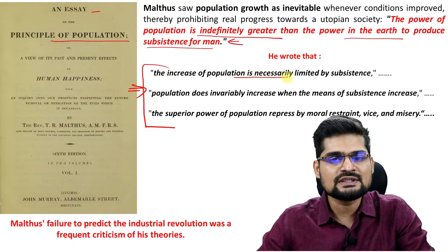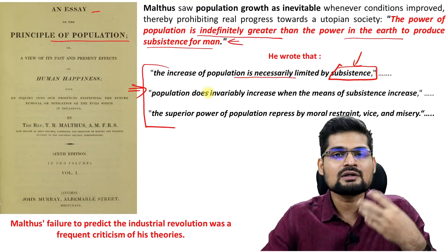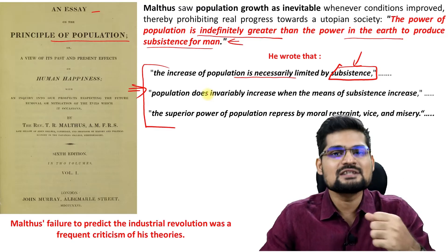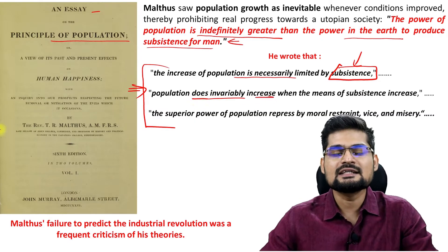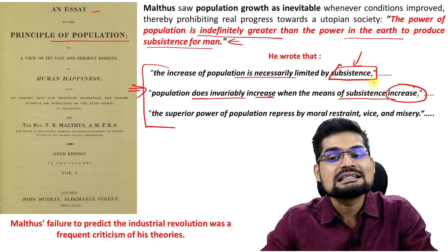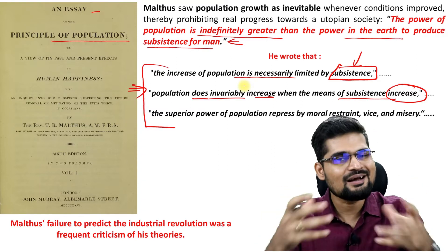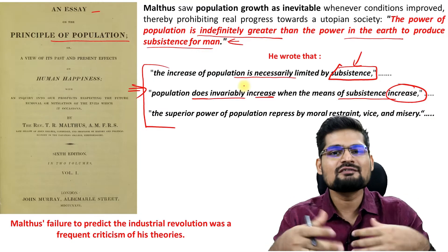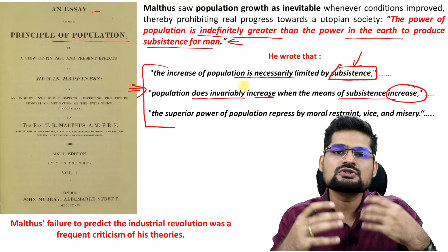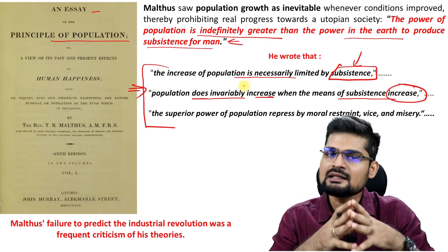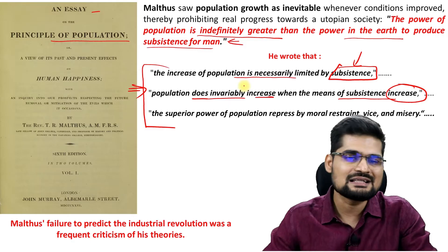Population does invariably increase when the means of subsistence is increasing. Means of subsistence is the basic idea of food, clothing, and shelter — the basic facilities. If you have those basic facilities, population growth is going to happen, as we see in most developed countries already. The third part is that the superior power of population is repressed by moral restraint, vice, and misery, because human beings will always grow in numbers and this would gradually lead to misery in society.